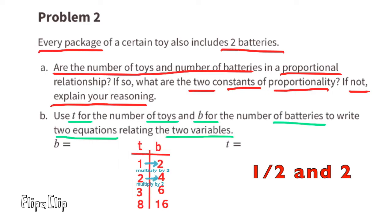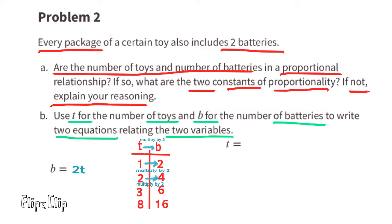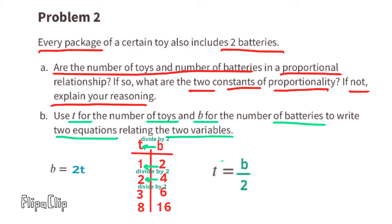Part b — use t for the number of toys and b for the number of batteries to write two equations relating the two variables. We can write b equals 2t, because the number of batteries always equals two times the number of toys. We can also write t equals b over 2, or equivalently t equals one-half times b, because the number of toys always equals half the number of batteries.